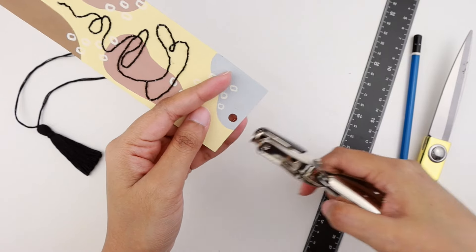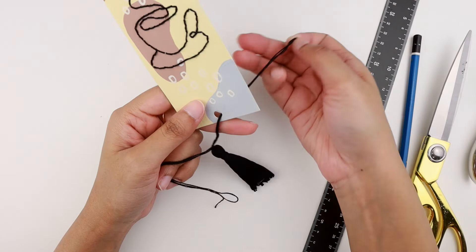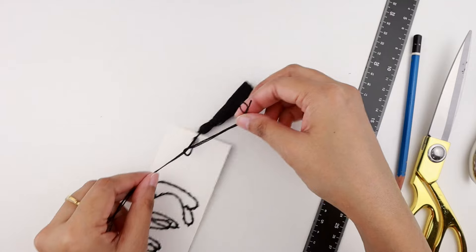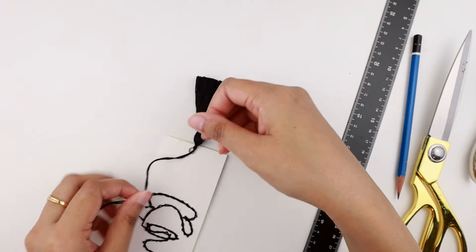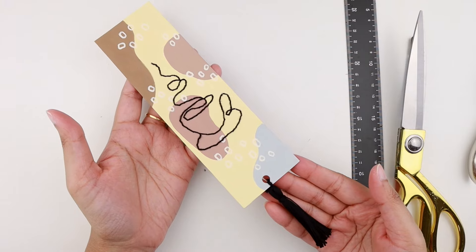Then we're going to punch a hole at the bottom and tie the tassel. And we have our line art embroidery bookmark ready.